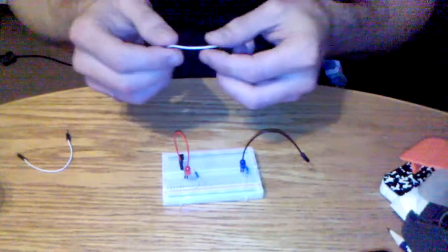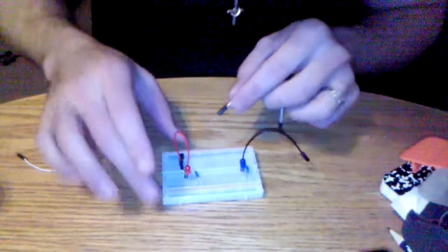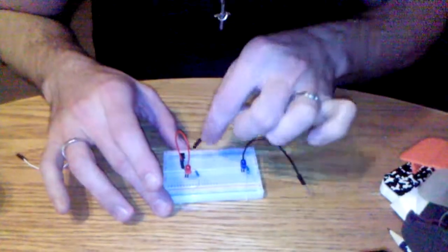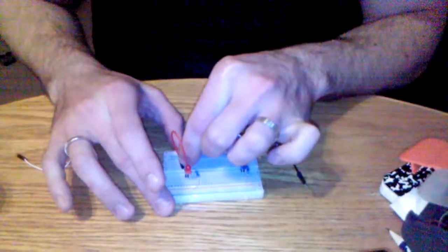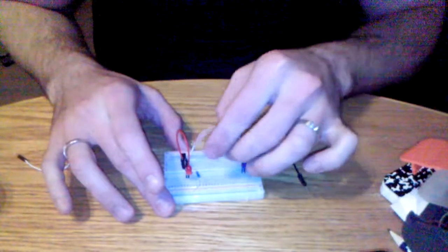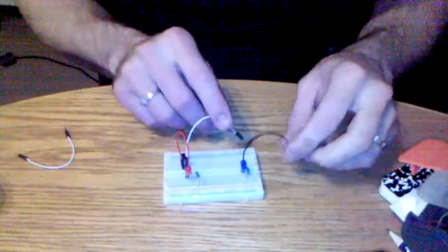And take another jumper acting as a probe, and connect it to the collector. So there's your two probes here.